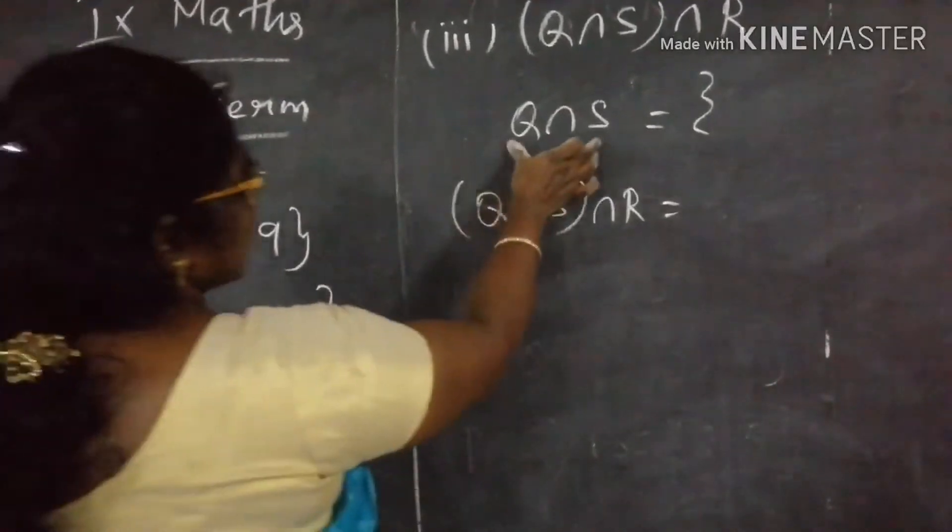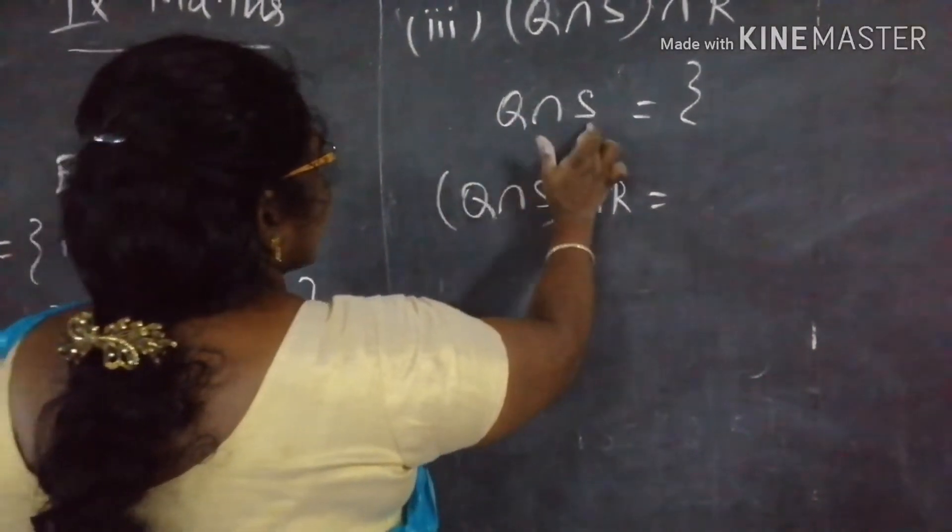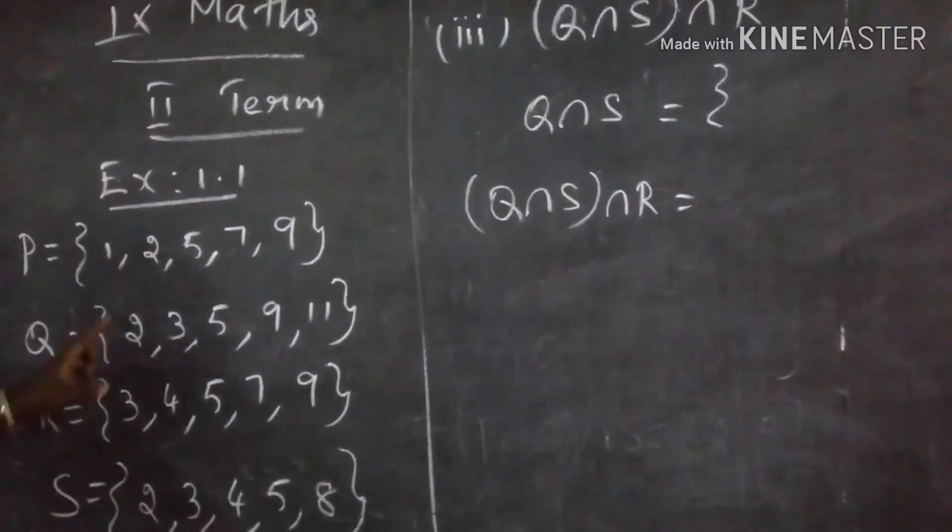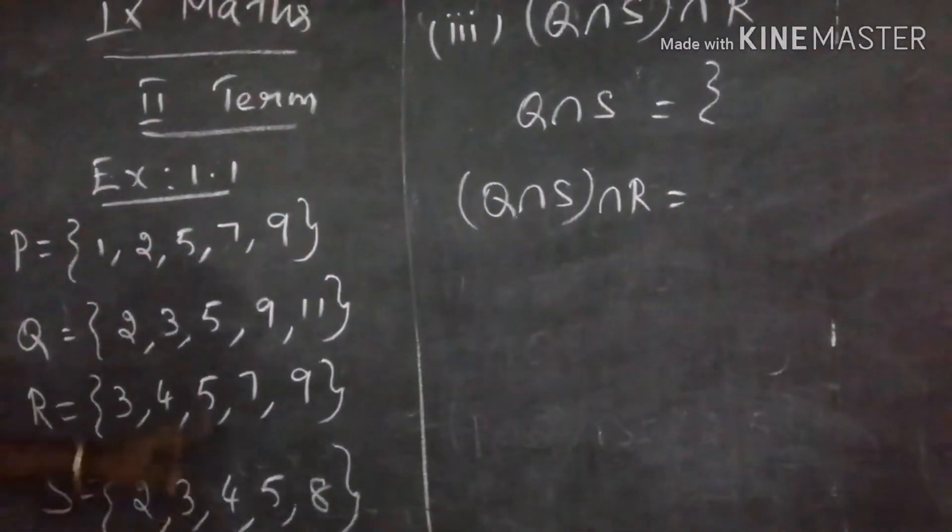2, 3, 5. Q intersection S. Q and S are common elements. Q, S: 2, 3, 5.